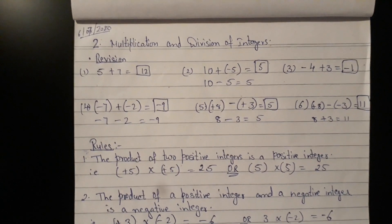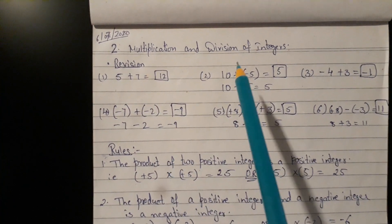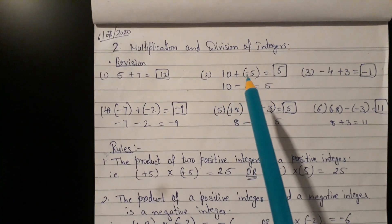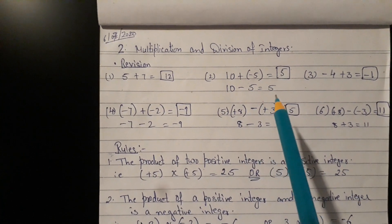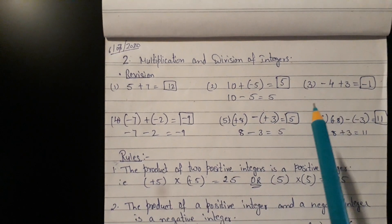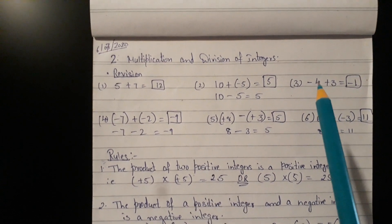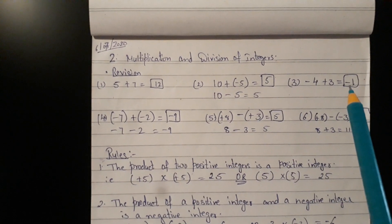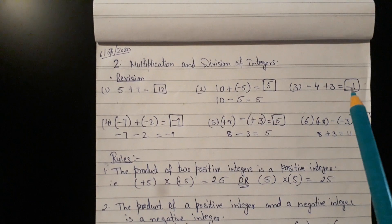First one, 5 plus 7 that will give us 12. Second, 10 plus bracket minus 5. Open the bracket. That's 10 minus 5 will give us 5. Plus into minus minus. Minus 4 plus 3, the sum is in minus. Minus 4 plus 3 will give answer minus 1 because it's a minus sum and sign of the greater number.